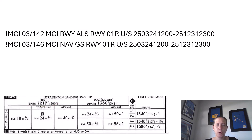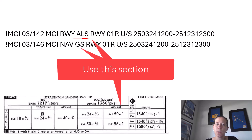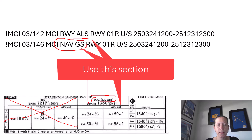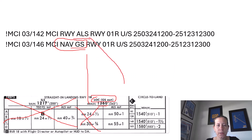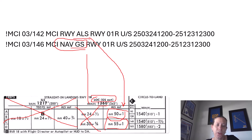What if I added this NOTAM into the mix? Now we have two NOTAMs combining. Number one, the approach light system still is not working. But now the glide slope is not working either, so I can't use that part of the chart. I'm back to using the MDA of 1,360. But also, with approach lights out of service, Category A or B would require RVR 5,000 feet or one mile. Category C, D, or E would require RVR 5,500 feet — one statute mile required visibility. That bumps us up to basically the highest possible category.